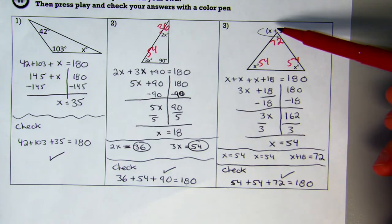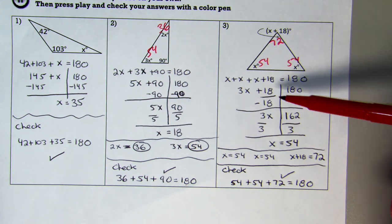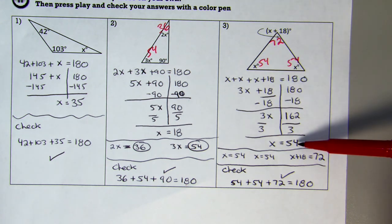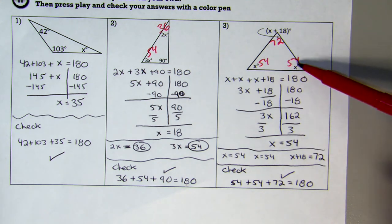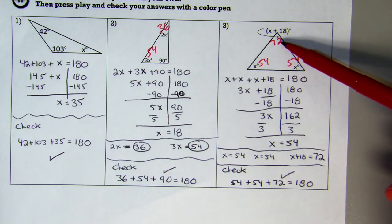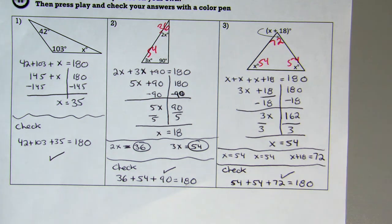Lastly, I add together 3x plus 18 plus x plus x, and I get x as a value of 54. Plug my value of 54 in to get 54, 54, and that turns to 72. Add them all up to check it, and yes, it does equal 180 degrees.